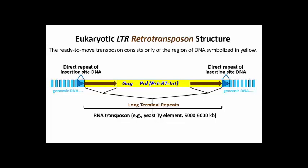Note the POL region. This consists of overlapping reading frames, also called ORFs, encoding the PRT, RT, and INT genes. See if you can recall what overlapping ORFs really mean.